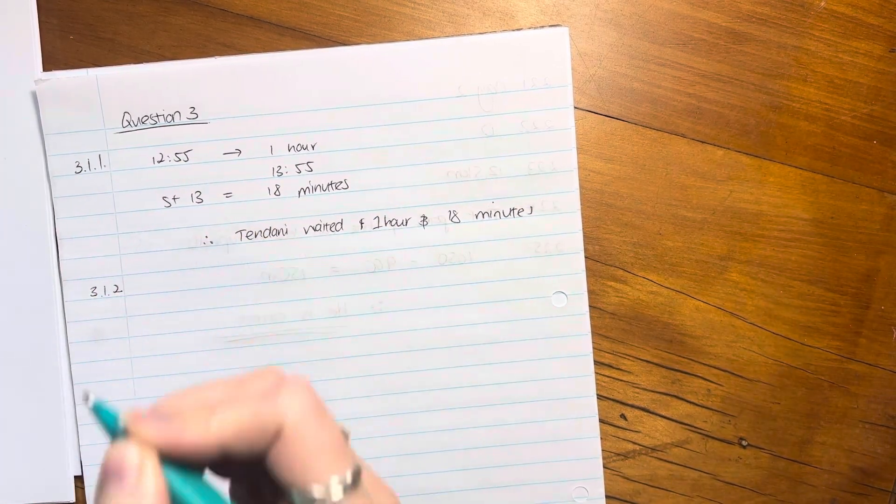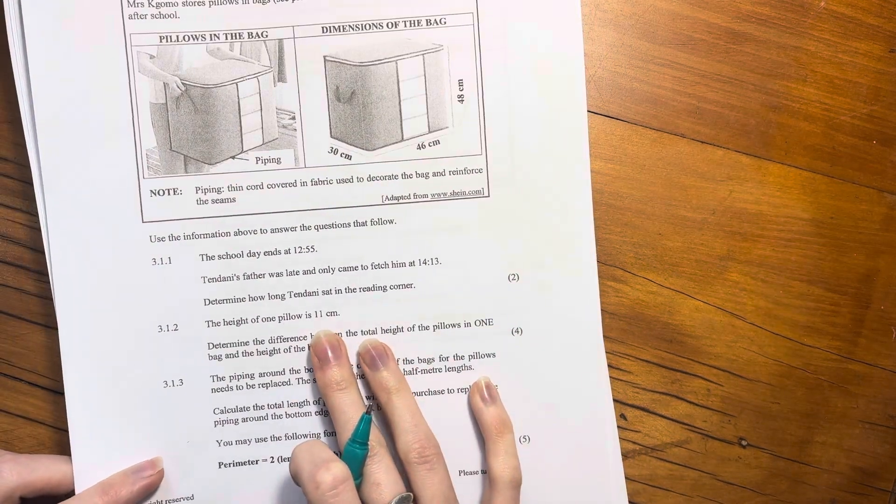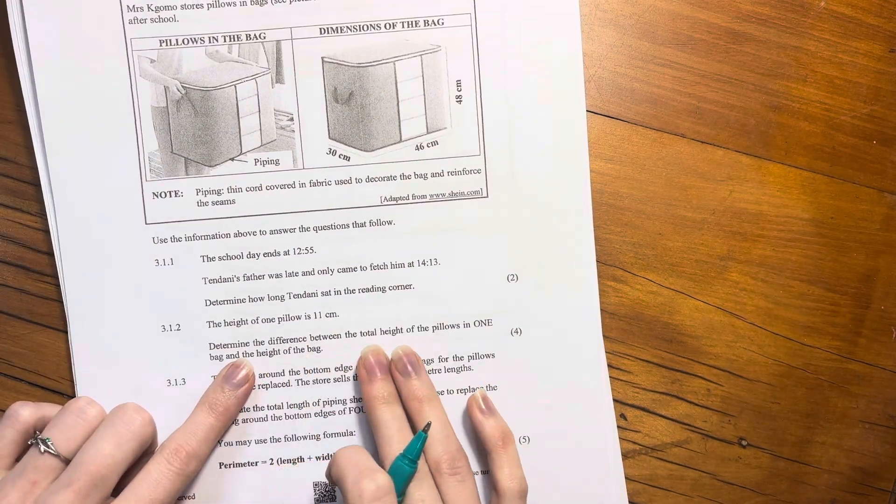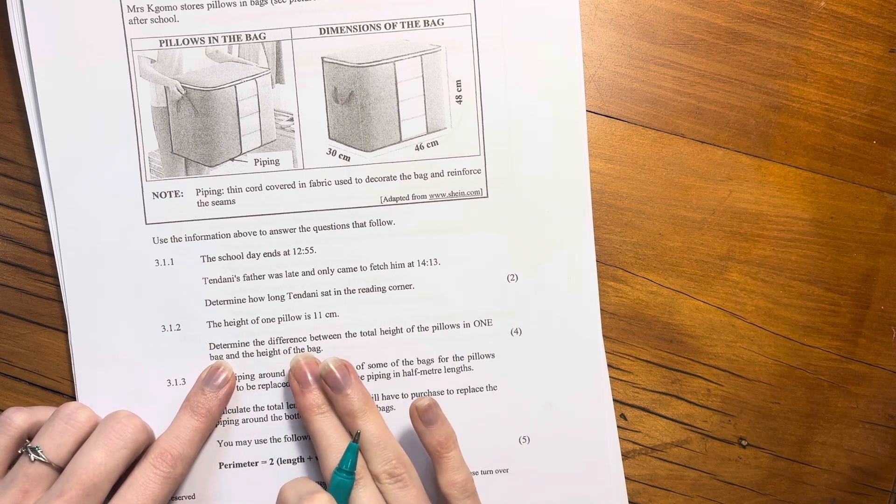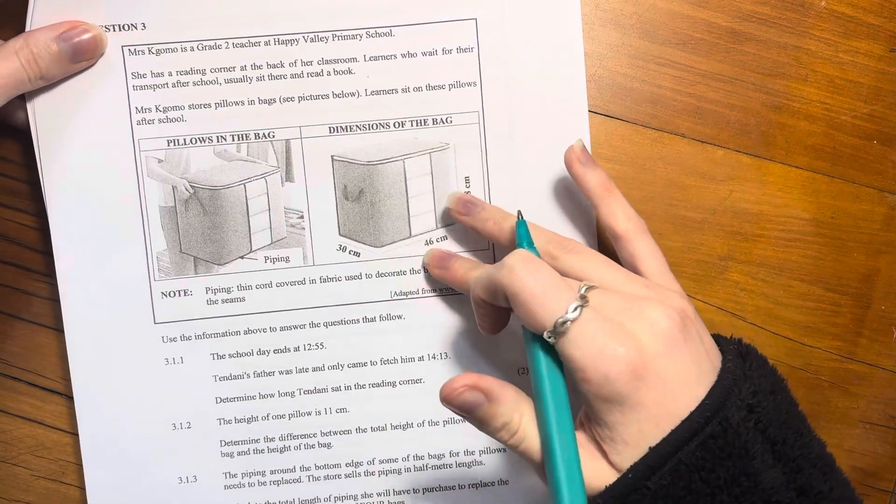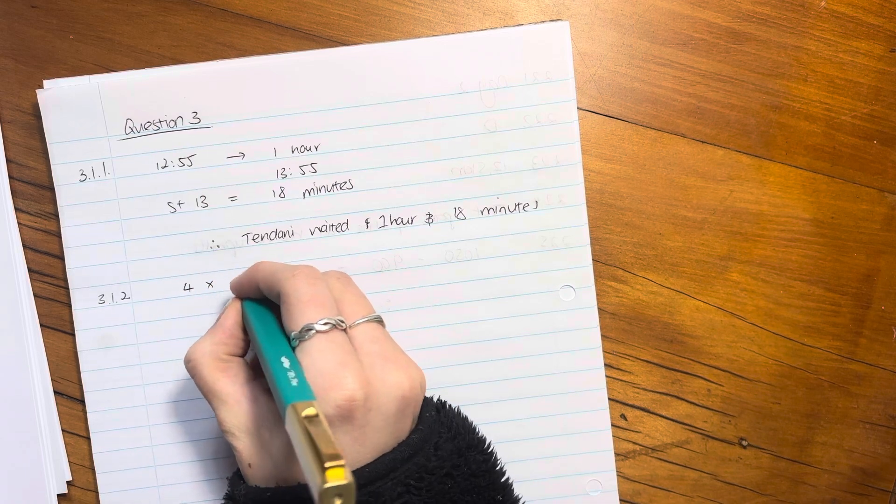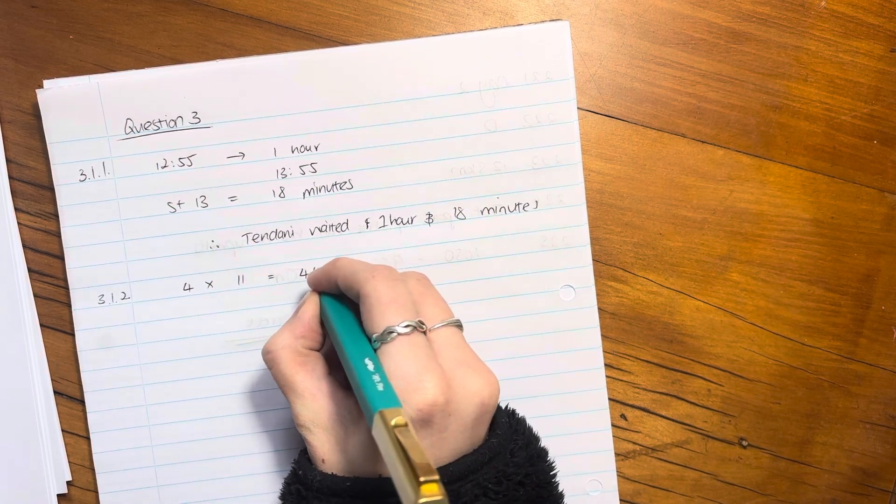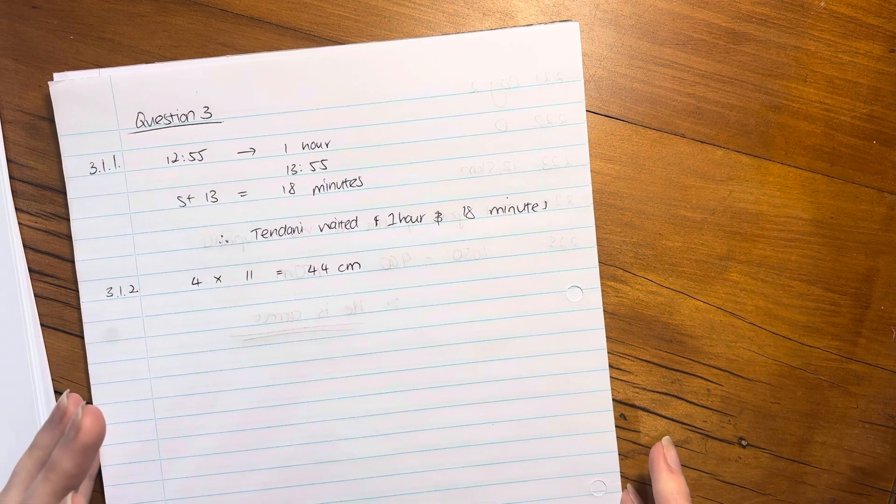3.1.2. The height of one pillow is 11 centimeters. Determine the difference between the total height of the pillows in one bag and the height of the bag. So from the picture, we can see that four pillows can fit into the bag. So if we know that each pillow is 11 centimeters, you say 4 times 11, which gives you 44 centimeters. You can do that in your head or calculator if you're not comfortable.